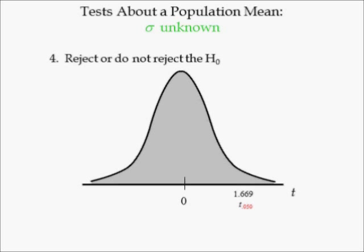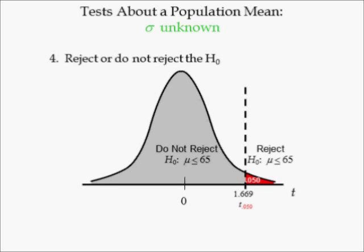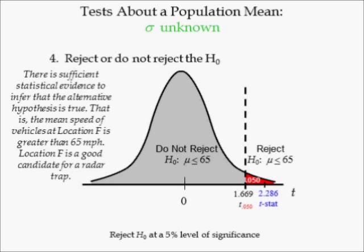In step four, we determine whether the null hypothesis is rejected or not. Since the critical value is 1.669, we plot it on the number line. This value defines the reject and do not reject the null hypothesis regions. The area to the right of 1.669 is equal to significance level 0.050. Since the sample data yielded a T-stat equal to 2.286, it is plotted on the number line to the right of critical value 1.669. Thus, we reject the null hypothesis at the 5% level of significance since the T-stat is greater than the critical value. This means there is sufficient statistical evidence to infer that the alternative hypothesis is true — the average speed at location F is greater than 65 miles per hour, and hence location F is a good candidate for a radar speed trap.